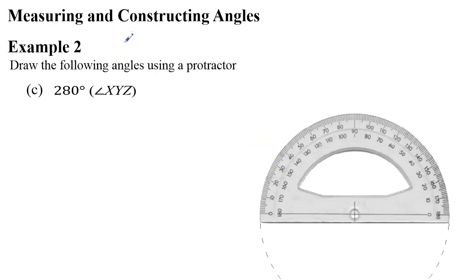So, we're going to do something similar that we spoke about in example 1. And, we're going to take 360 degrees, and we're going to subtract 280. Now, when we do that, we're going to get an angle of 80 degrees.